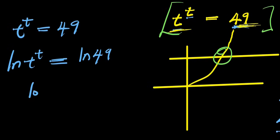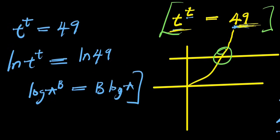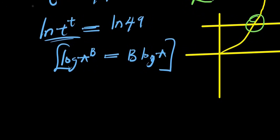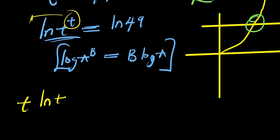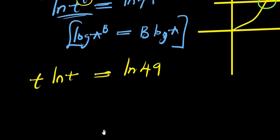Using the logarithm power property — ln(a^b) = b·ln(a) — the exponent t comes down in front. This gives us t·ln(t) = ln(49). Now we need to manipulate this expression into a form suitable for the Lambert W function.